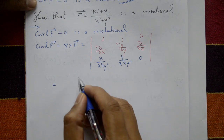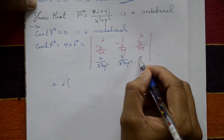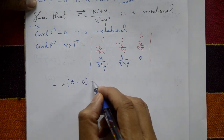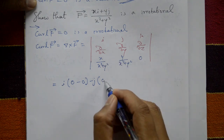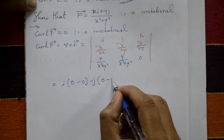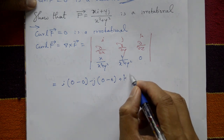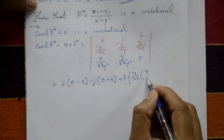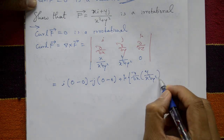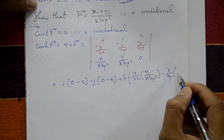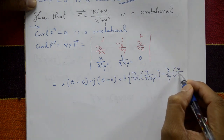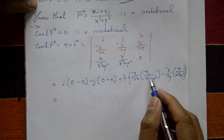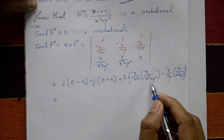Expanding the determinant: the i and j components involve z-derivatives of terms with no z variable, so those are zero. The k component gives: ∂/∂x [y/(x²+y²)] minus ∂/∂y [x/(x²+y²)].